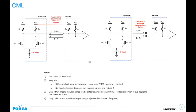For faster designs at Forza, we use CML outputs instead of LVDS — anything greater than 900 megabits per second. CML is not based on a standard. It's very fast compared to LVDS because the differential pair can only pull down, so no slow PMOS transistors are required. The designer has freedom to increase currents and reduce R-load. Only NMOS means rise and fall times can be better engineered, resulting in less distortion in eye diagrams and lower bit errors. Since it only sinks current, there's better signal integrity due to lower disturbance on supplies.